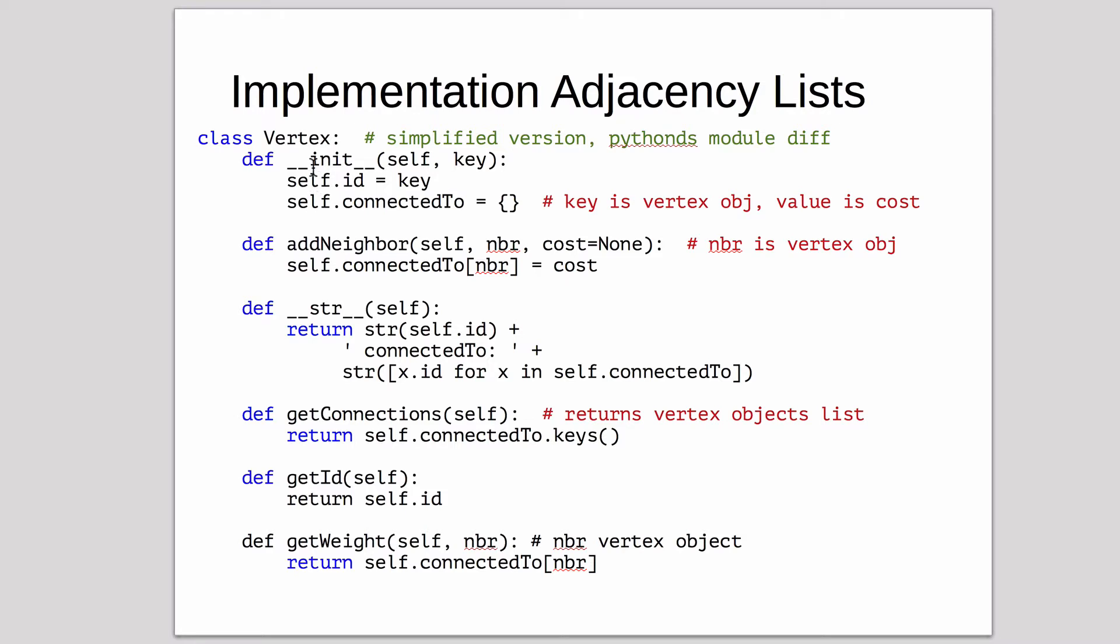When you make a new vertex, you pass it the key, and the key is stored in the ID. And then also in vertex, there's a thing to add a neighbor.